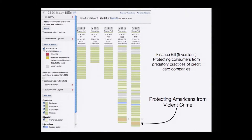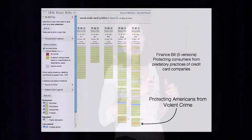This is an example of finding a really egregious case: a bill about protecting consumers from predatory lending practices and big credit card companies. Every single block is a section of the legislation, and towards the bottom in the last two versions there are brown sections which turned out to have to do with protecting Americans from violent crime—allowing folks to bring semi-automatic rifles into national parks.